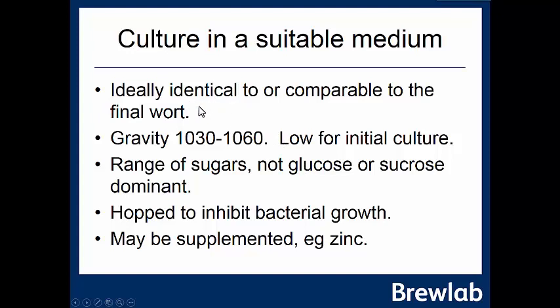Our propagation worts should be identical or comparable to the final wort. Growing yeast in simple sugars like glucose or sucrose gives very different metabolism and may not provide good productivity. We want a gravity somewhere between 1030 and 1060 — starting with a lower gravity wort and possibly going higher later, though higher gravity increases yeast stress. We want a range of sugars including maltose so the yeast is conditioned to fermenting it. Using hopped wort is beneficial as it inhibits bacterial growth. Zinc supplementation can help but must be carefully formulated at very low concentrations — it should not simply be added directly.